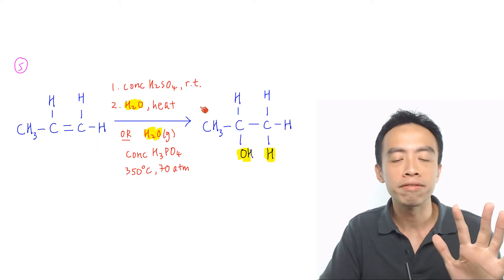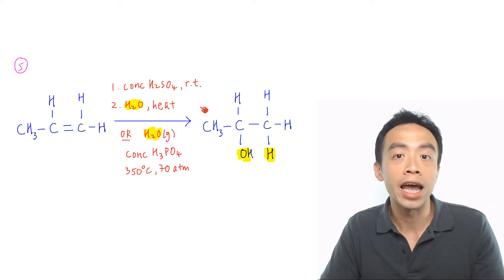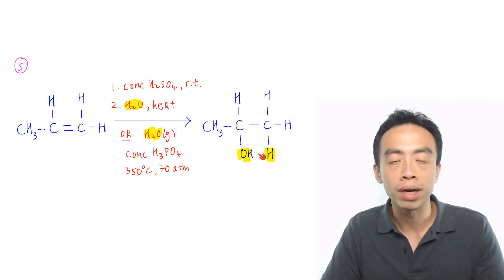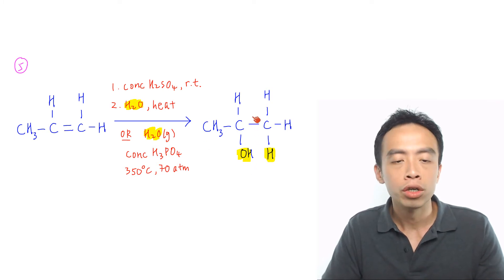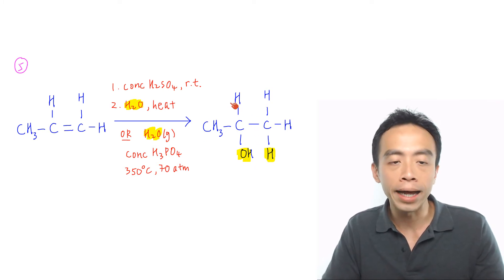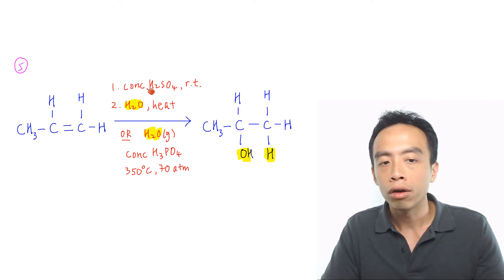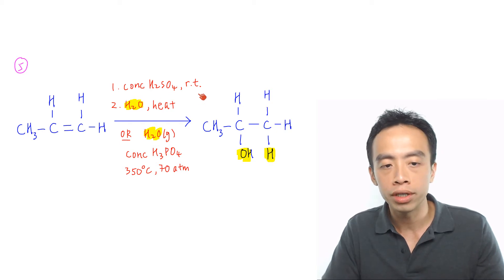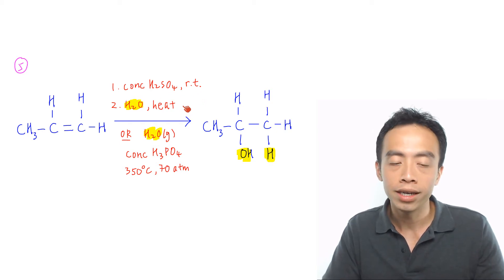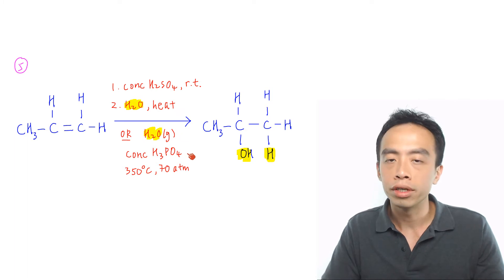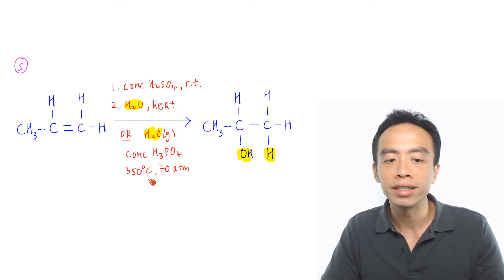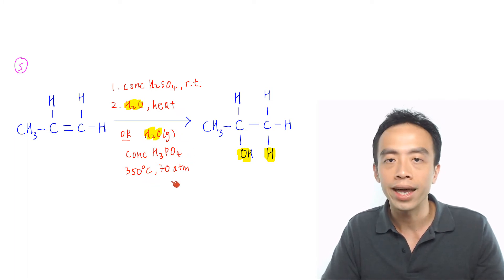Must-know reaction number 5 is the addition of water to form alcohols. It can be done either by concentrated H2SO4 at room temperature followed by water and heat, or using steam with concentrated H3PO4 at 350 degrees Celsius and 70 atmospheres.